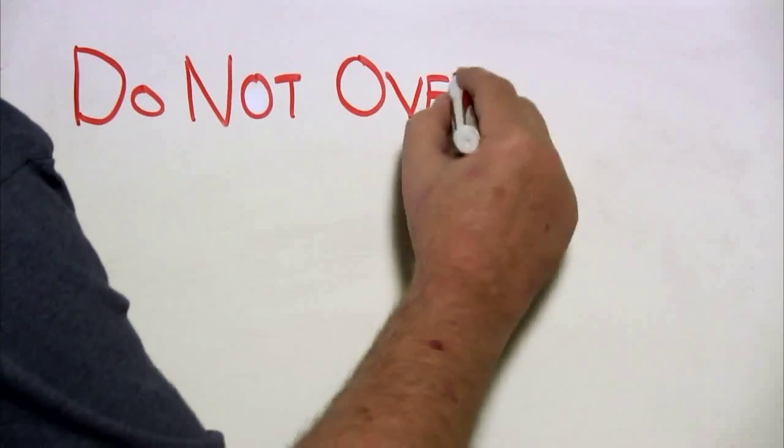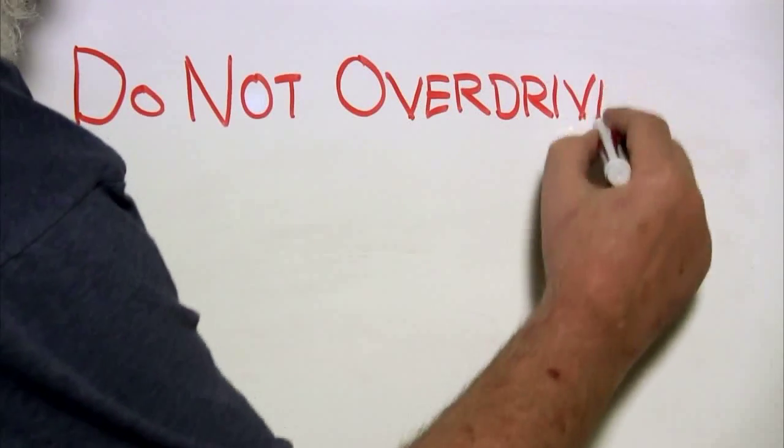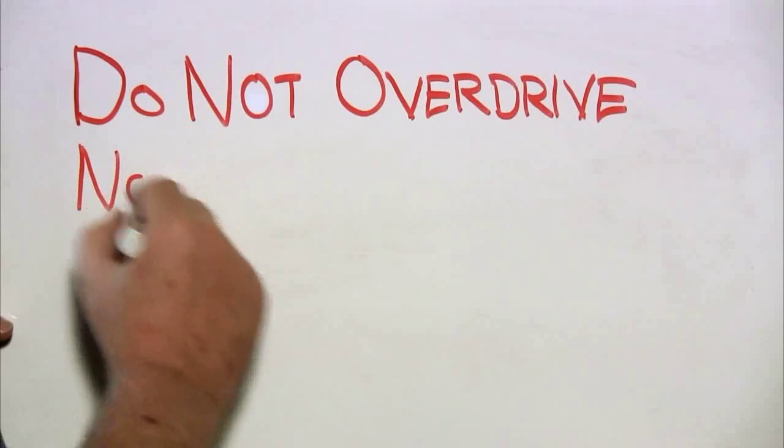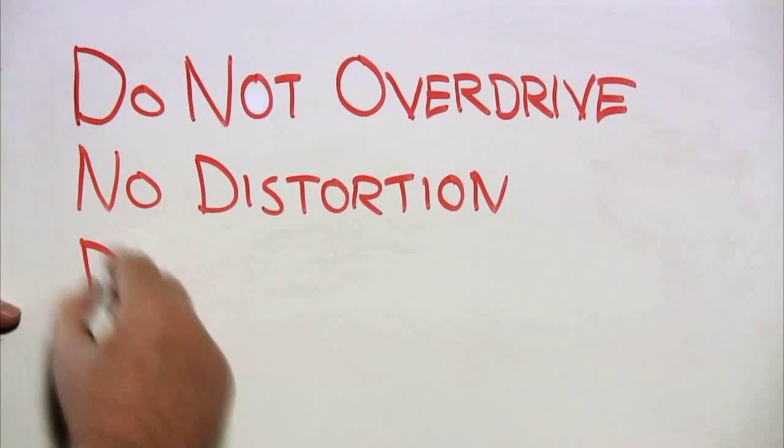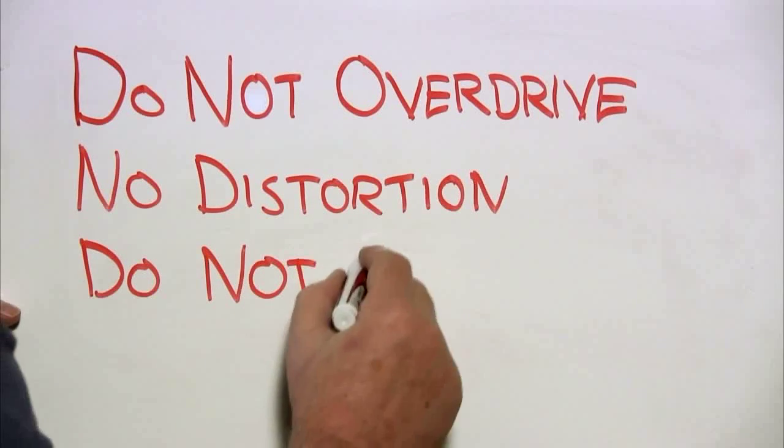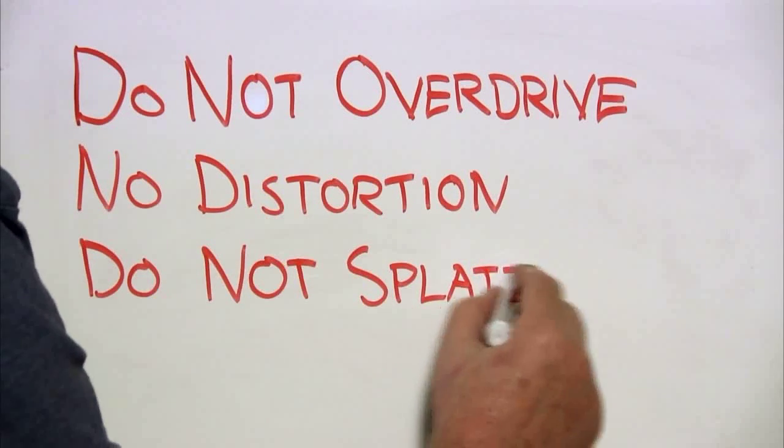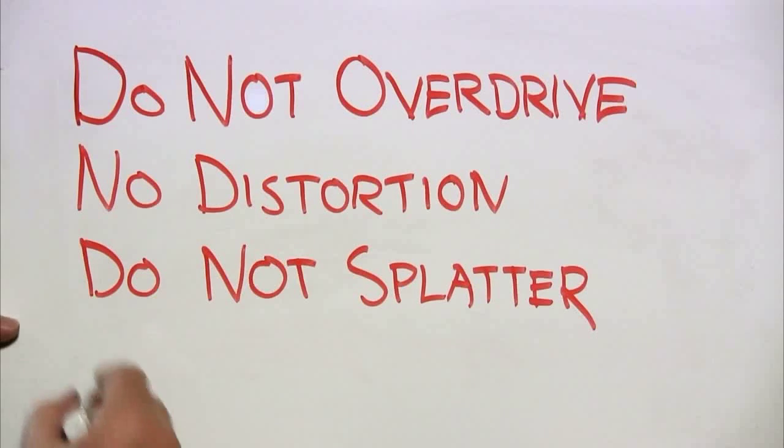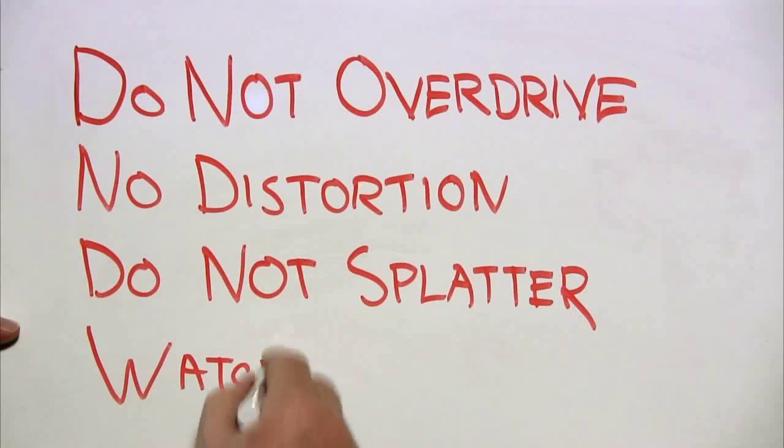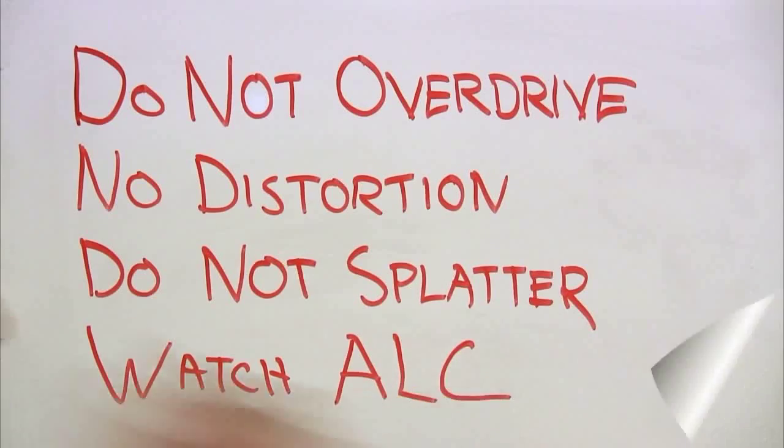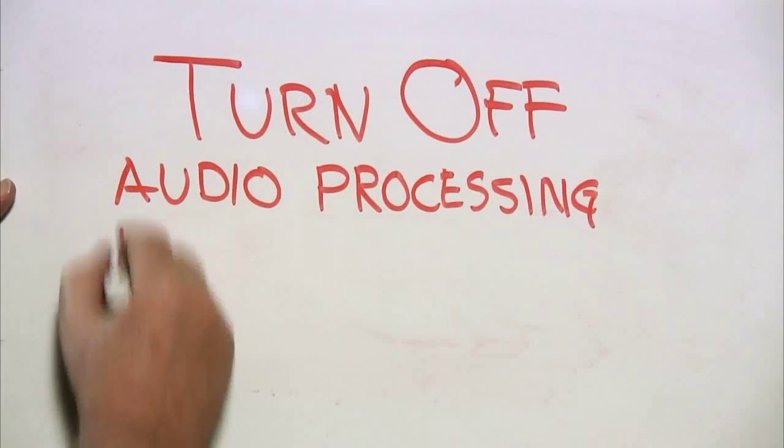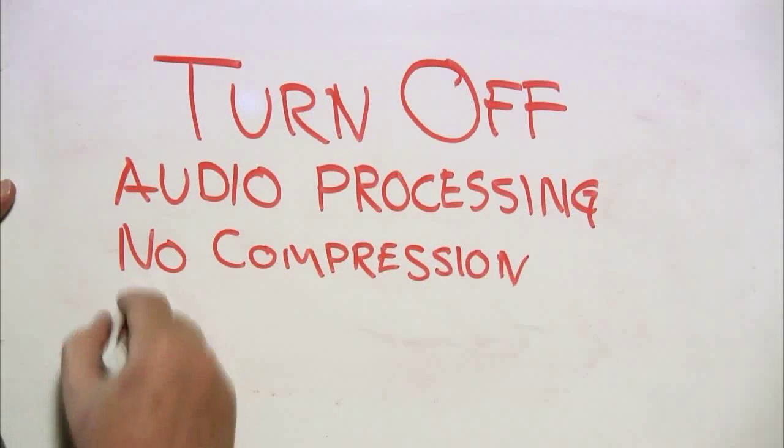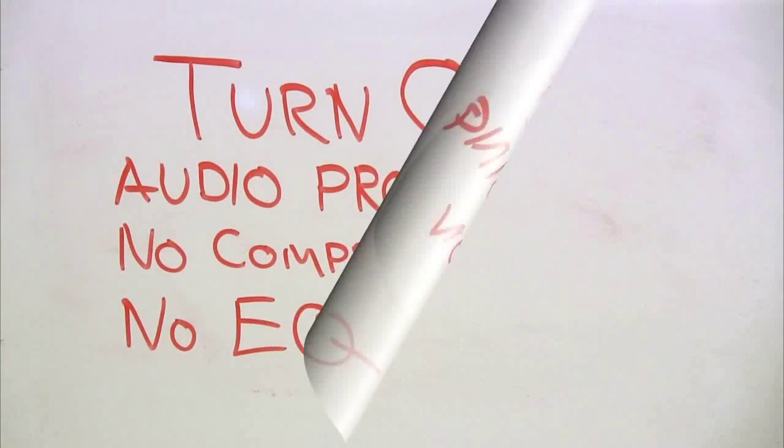Okay, once we have our cables connected, now we need to think about setting the audio level. We do not want to overdrive the transmitter. We do not want to cause distortion. We do not want to cause splatter on the band. So you want to watch your ALC, your automatic level control indication on your meter. You'll have to look at your manual to see how to set this properly. We want to turn off any audio processing. That means any audio compression, turn it off. Any EQ that you may have, turn it off.